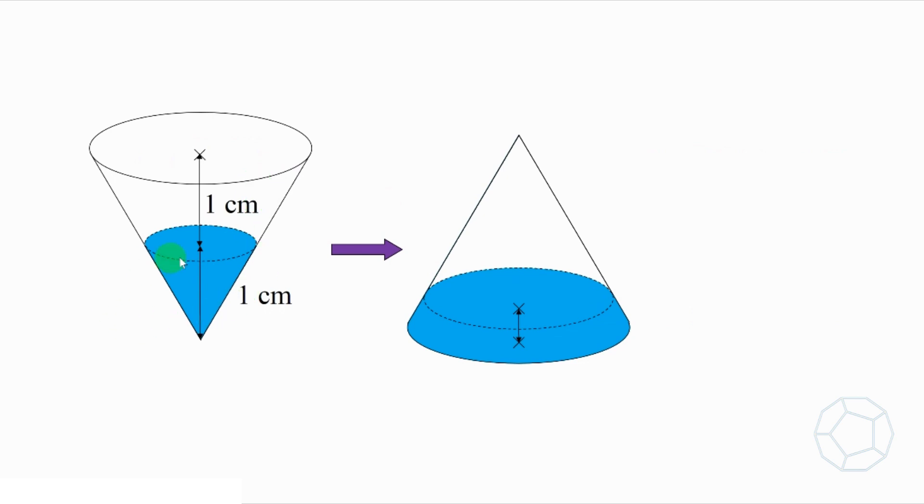You see, the water right here and the container are similar figures. There is an important relation about the volume and the height. That is, the volume ratio is equal to the cube of the height ratio. Let's make good use of that.